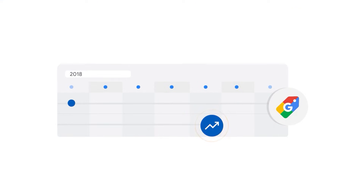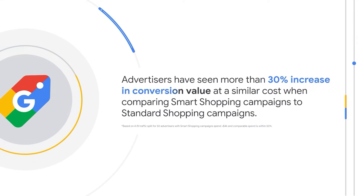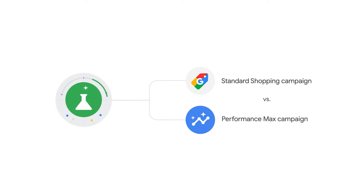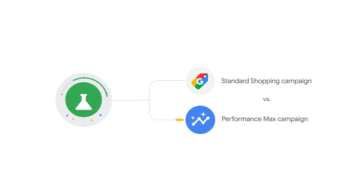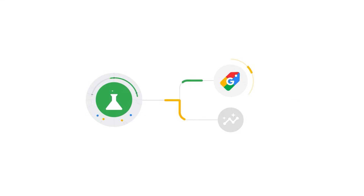Since the launch of Smart Shopping campaigns in 2018, advertisers have seen great results in uplift when compared to standard shopping campaigns. On average, advertisers have seen more than 30% increase in conversion value at a similar cost when comparing smart shopping campaigns to standard shopping campaigns. With Performance Max, we are seeing an additional 12% average conversion value uplift on top of smart shopping campaigns, multiplying performance even further. In a head-to-head experiment of standard shopping campaigns versus a comparable Performance Max campaign targeting the same products, you'll see how much incremental conversion value at a profitable ROAS Performance Max is driving and at what return on ad spend. This will help you decide whether to switch your standard shopping campaigns over to Performance Max moving forward.